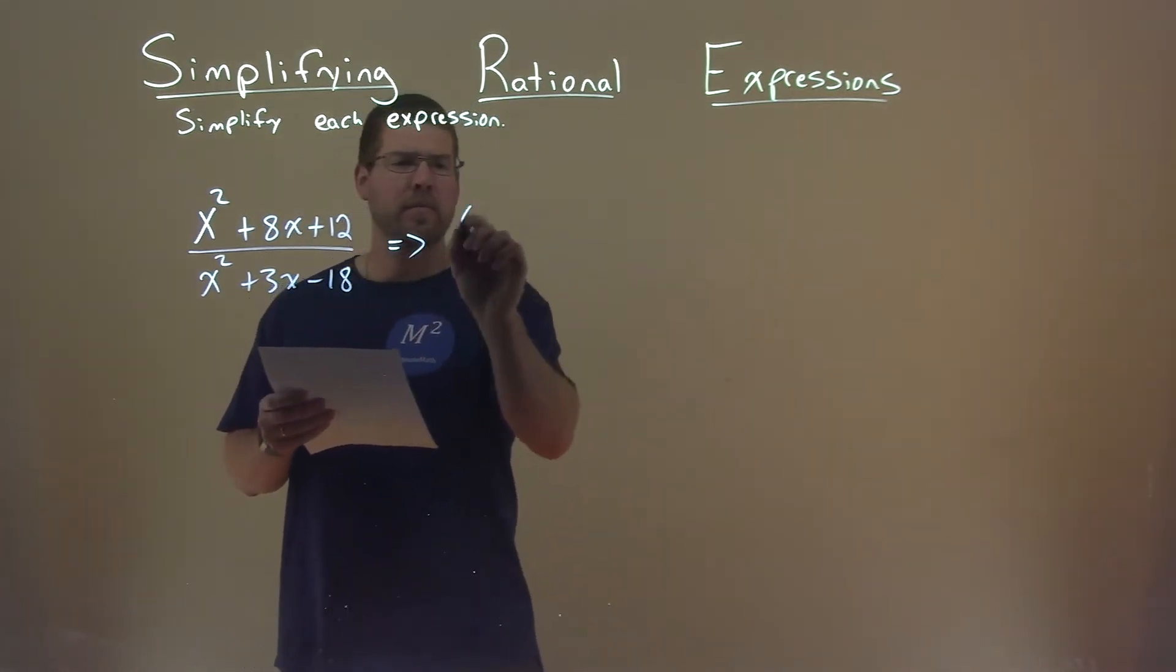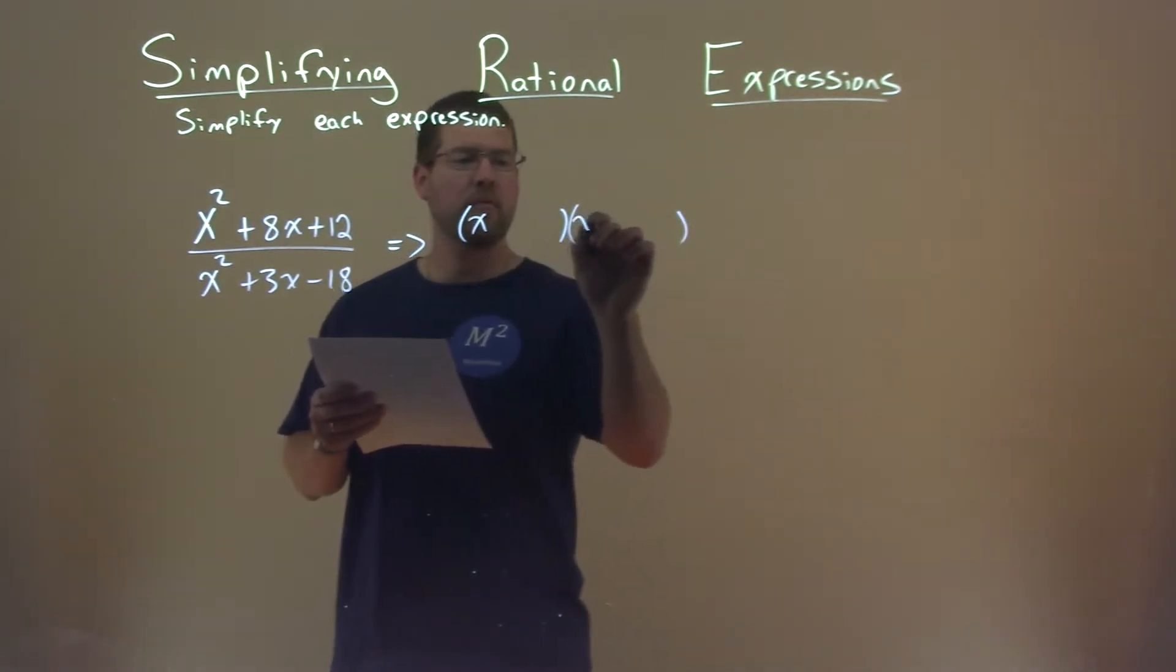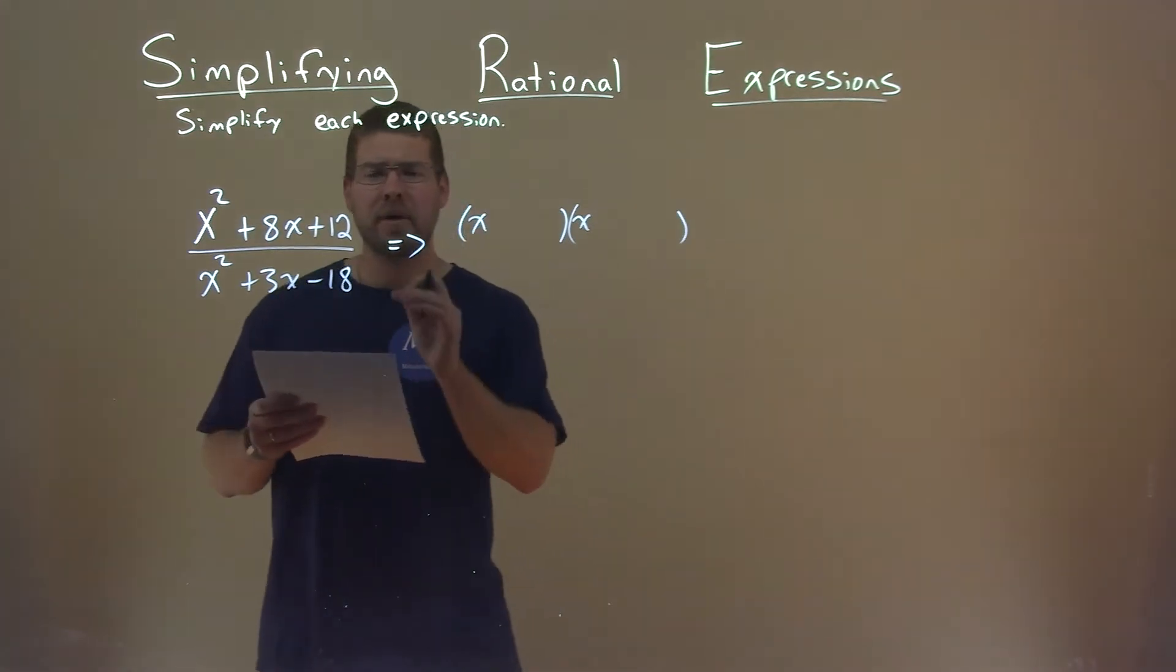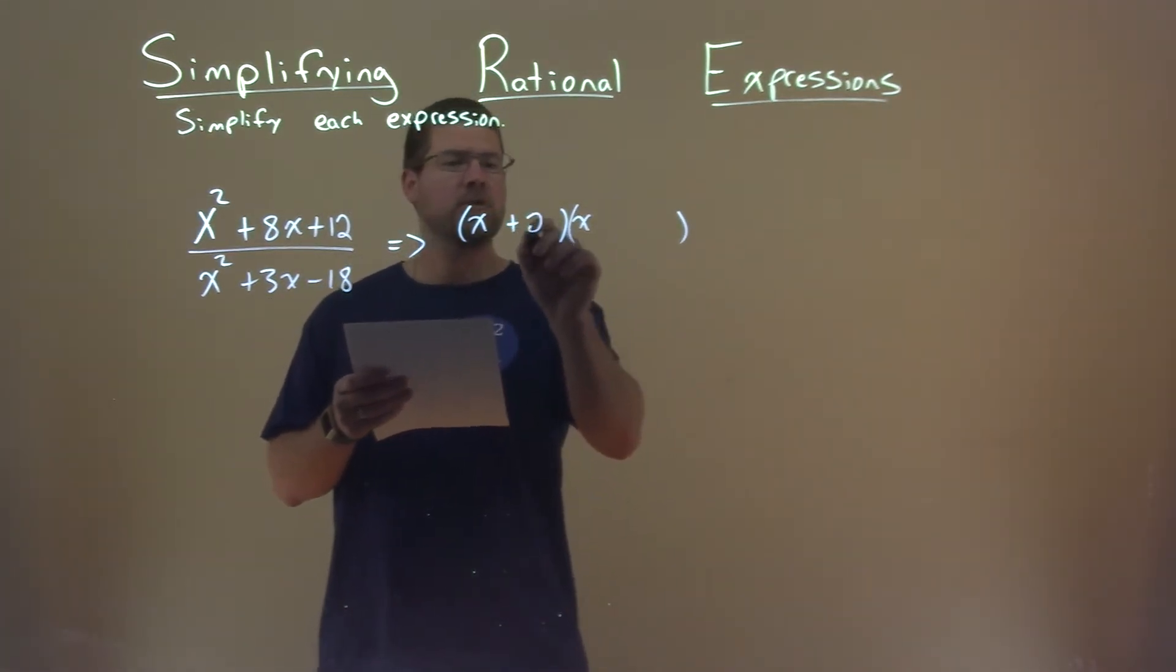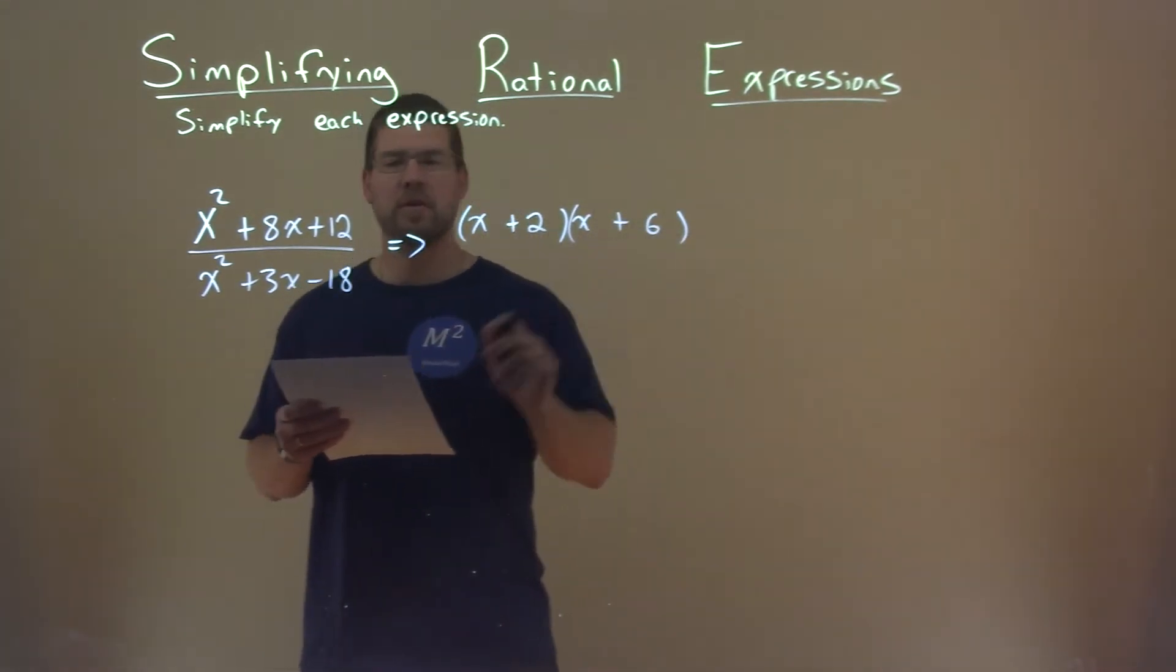Well, the numerator looks like it can be factored fairly easily. We have our form, and we have to ask ourselves what two numbers multiply to be 12 but add to be 8. Those two numbers are 2 and 6. 2 times 6 is 12. 2 plus 6 is 8.